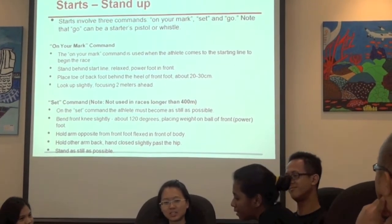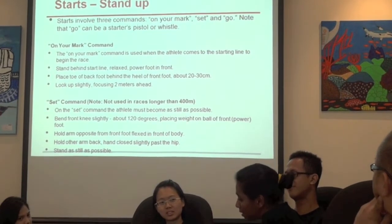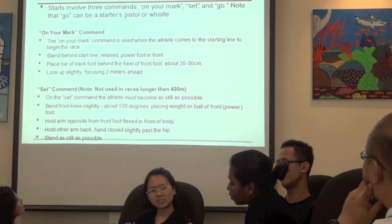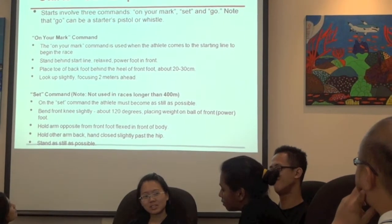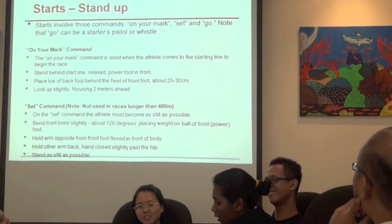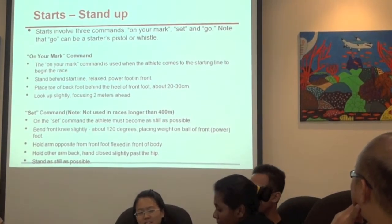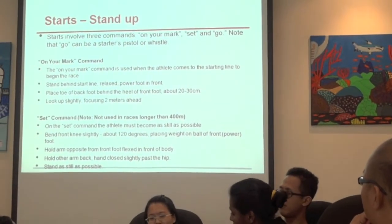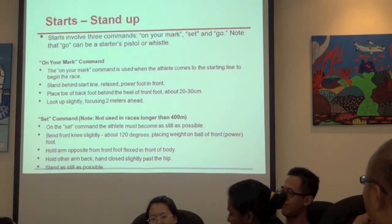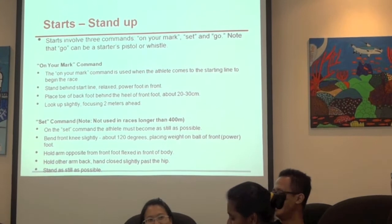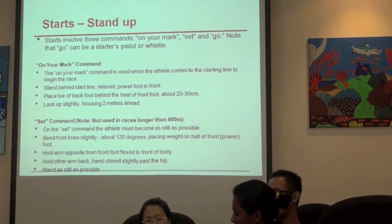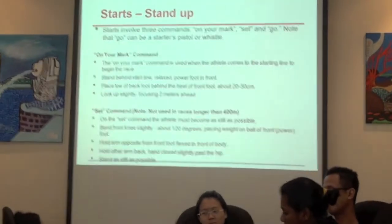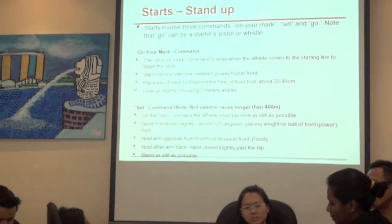On your mark: the athlete comes to the starting line to begin the race. Start behind the starting line, relax, power foot in front. Place the toe of the back foot behind the heel of the front foot, about 20 to 30 centimetres. Look up slightly, focusing two metres ahead. For the set command, the athlete must become as still as possible. Bend the front knee slightly, roughly 103 degrees. Pull the arm opposite from the front foot, flexed in front of the body, and pull the other arm back.